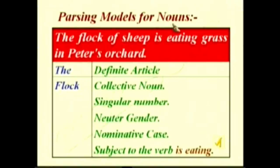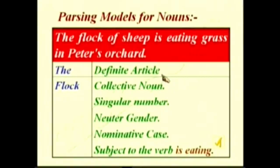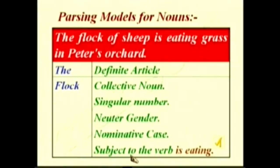Parsing models for nouns. Parse the sentence: 'The flock of sheep is eating grass in Peter's orchard.' Take each word: 'The' — definite article. 'Flock' — collective noun, singular number, neuter gender, nominative case, subject to the verb 'is eating.'